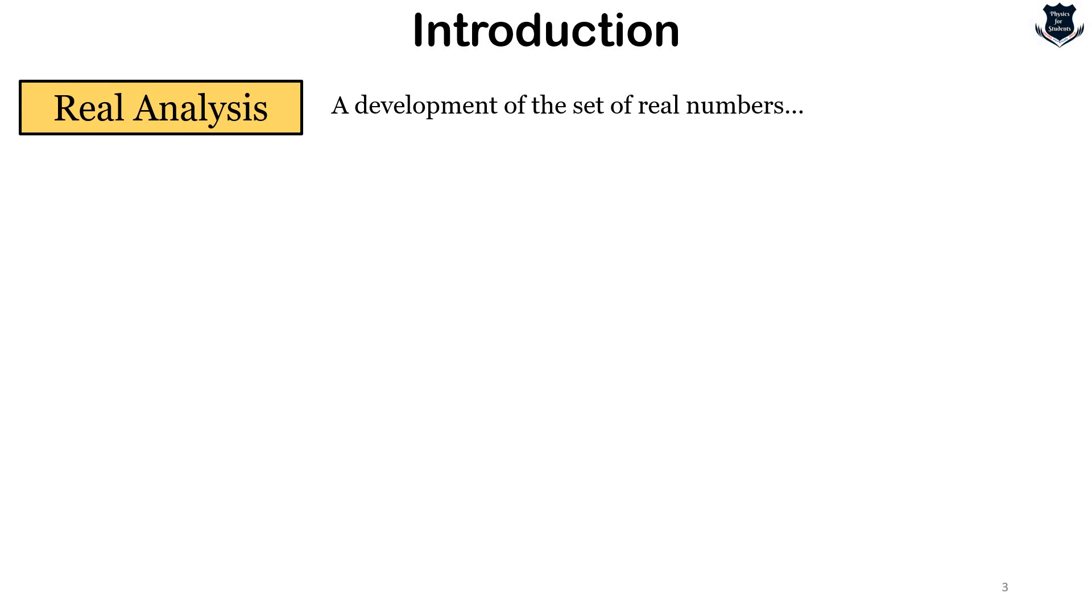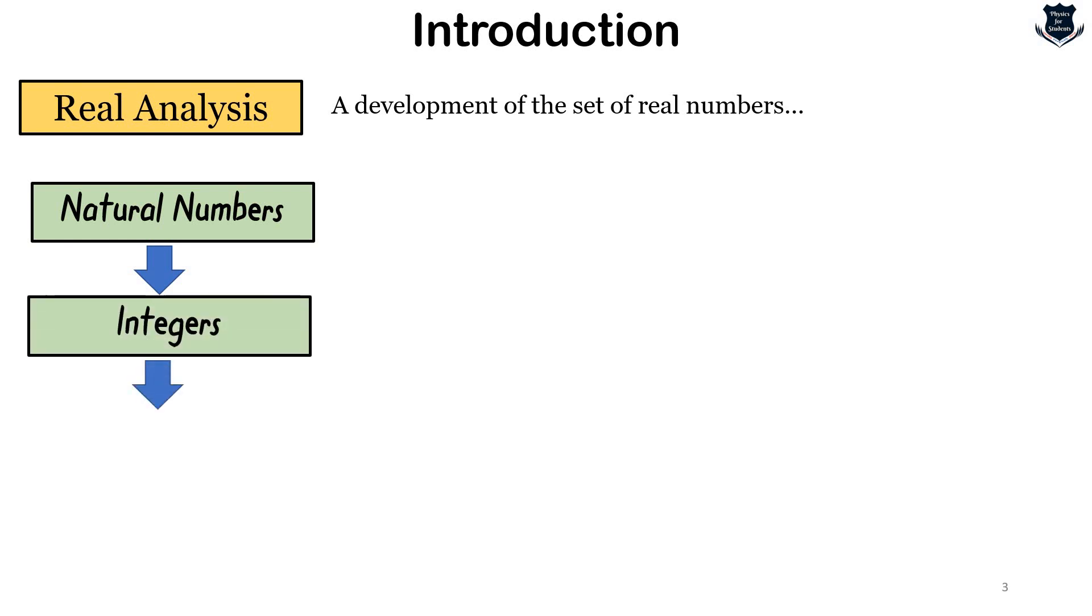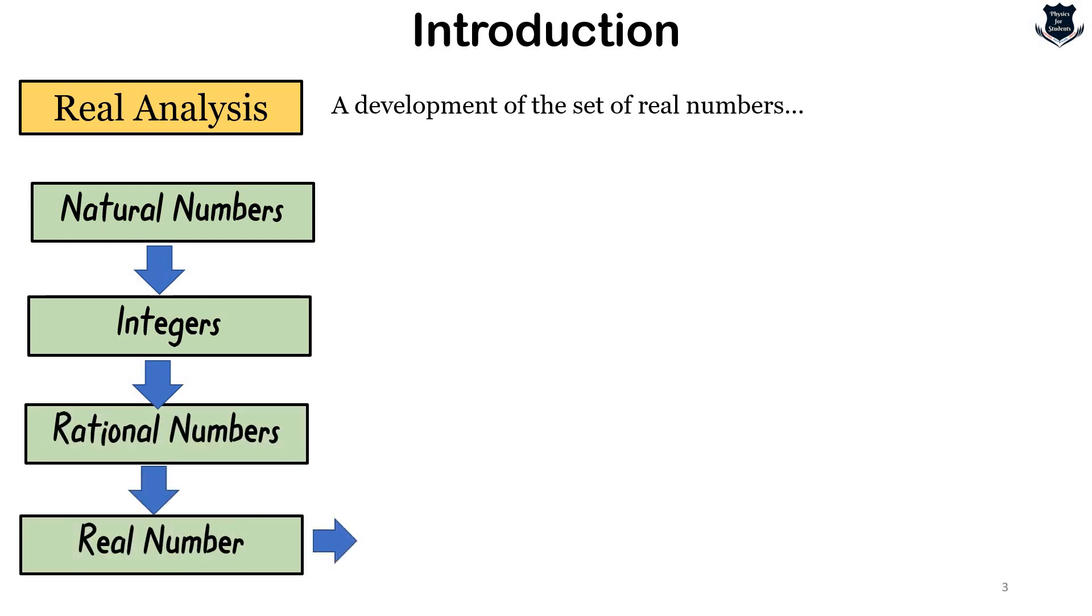Starting from the set of natural numbers, we first pass on to what we call integers, then to the set of rational numbers, and finally to the set of real numbers.